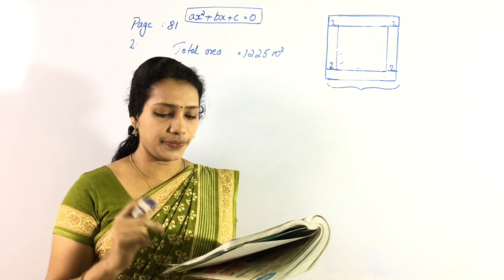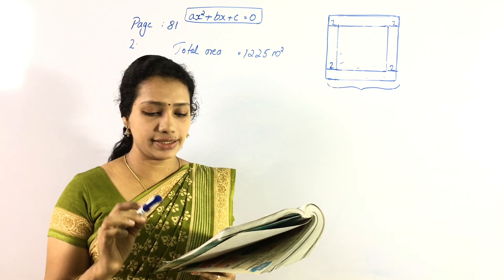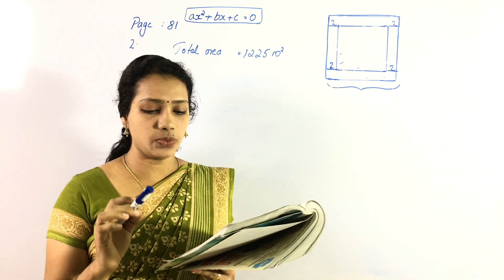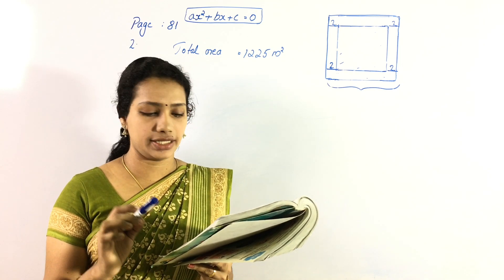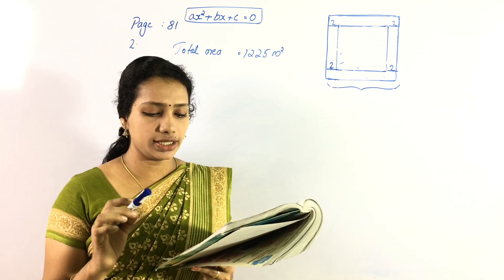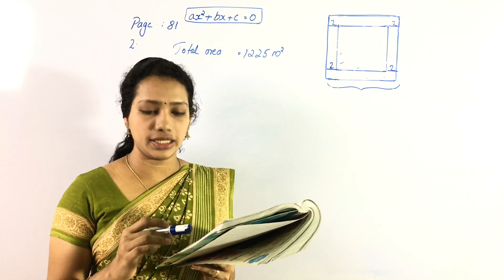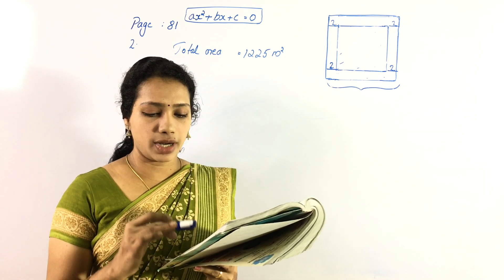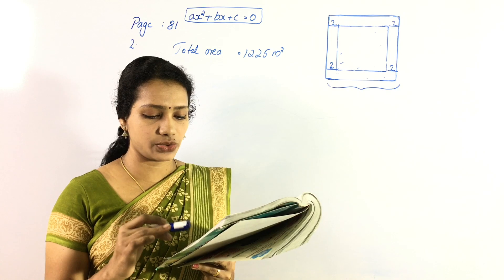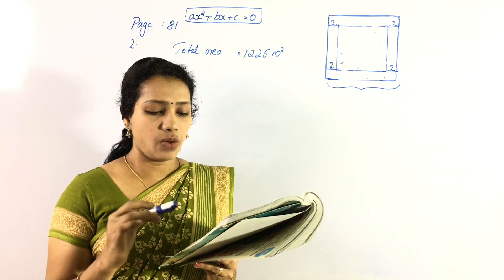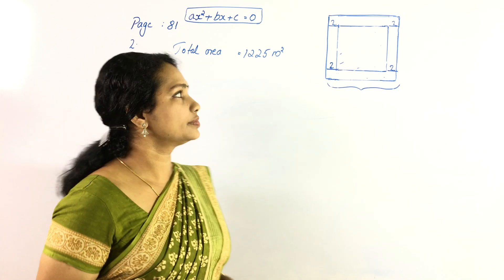Question number 2: A square ground has a 2-meter wide path all around it. The total area of the ground and path is 1225 square meters. What is the area of the ground alone?